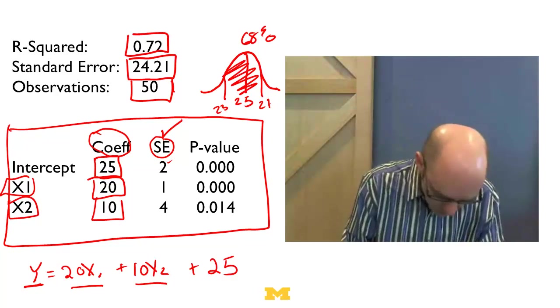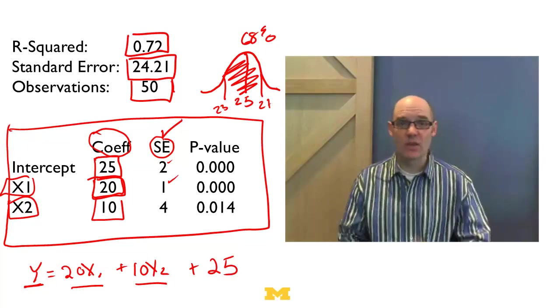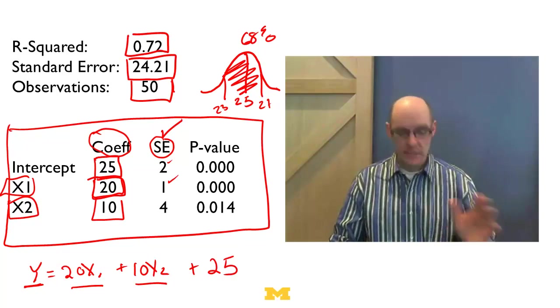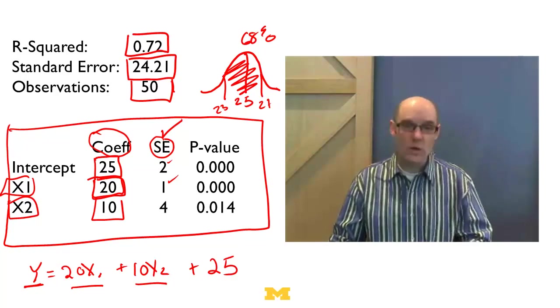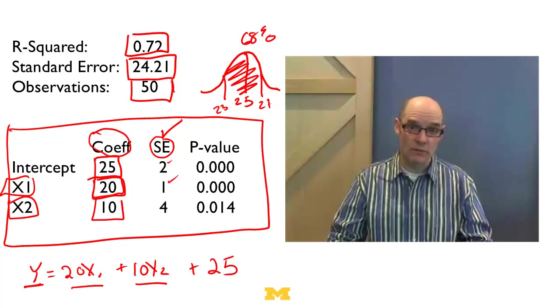Well, let's look at our x1. We've got a coefficient of 20, but the standard error is only 1. So what that's saying is, we can be really sure that the coefficient on x1 is between, like, let's say, 17 and 23. And we can be incredibly sure it's between 16 and 24.